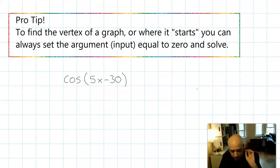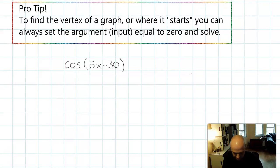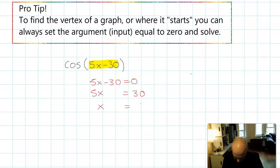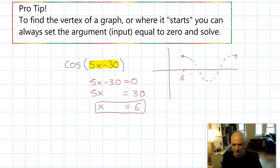Before we move on to the shortcut, I really want to highlight that tip: to find the vertex of a graph, or wherever the graph sort of starts, you can always set the input equal to 0 and solve. That will always work and it's going to be a really helpful thing to use — for example, in trigonometry. If you were graphing cosine of 5x plus 30 and wanted to know where that graph began on the x-axis, you could set 5x minus 30 equal to 0 and quickly solve to find that your graph should actually start at 6 on the x-axis. It's a really powerful tool either for starting to make your graph or for checking if your graph is correct.